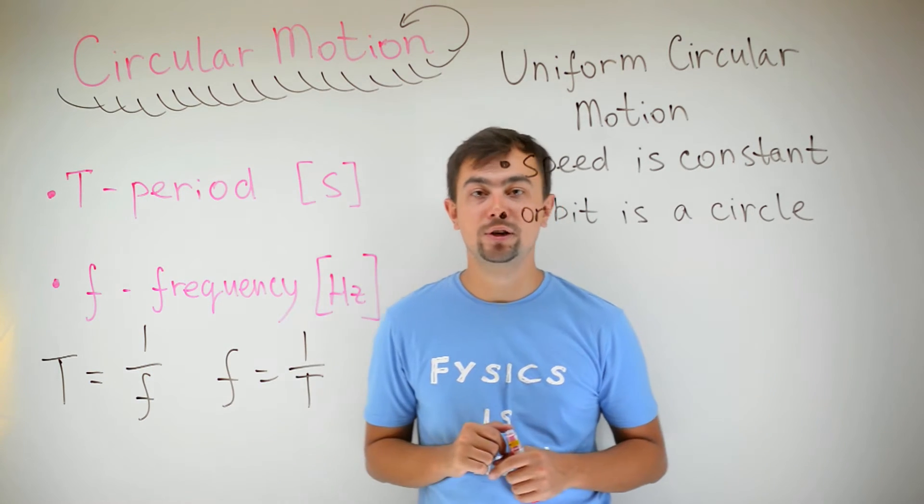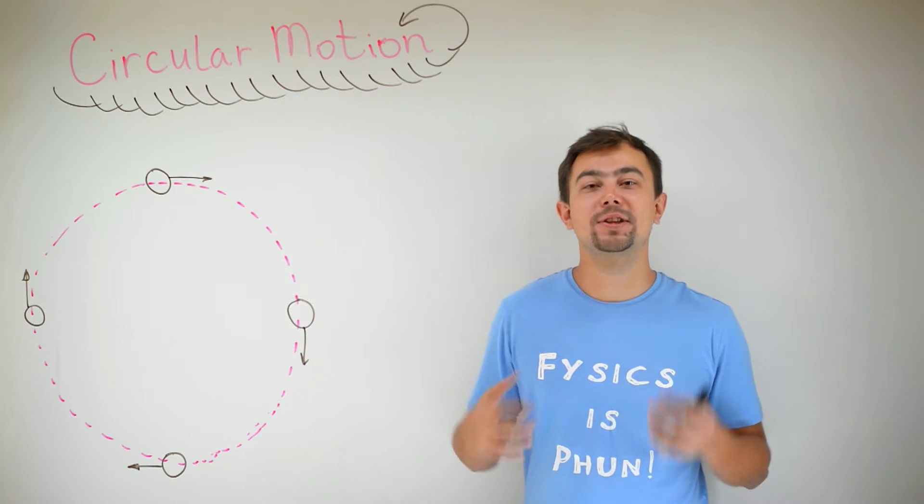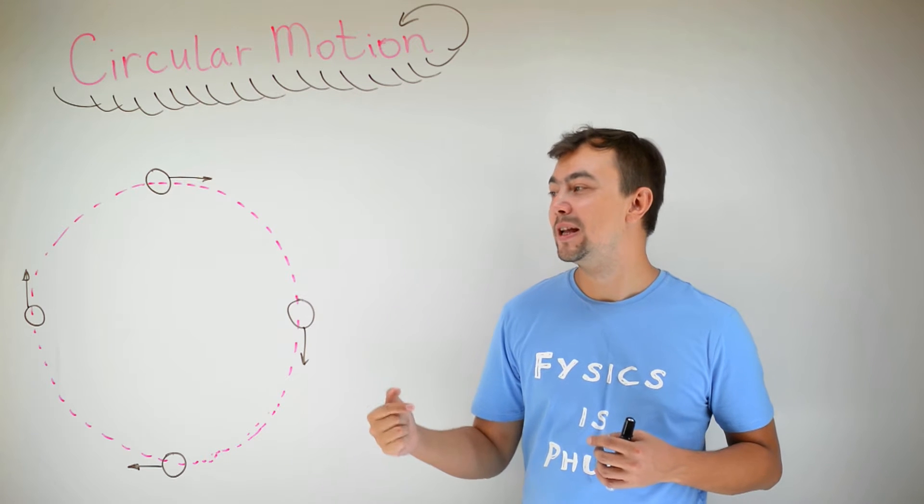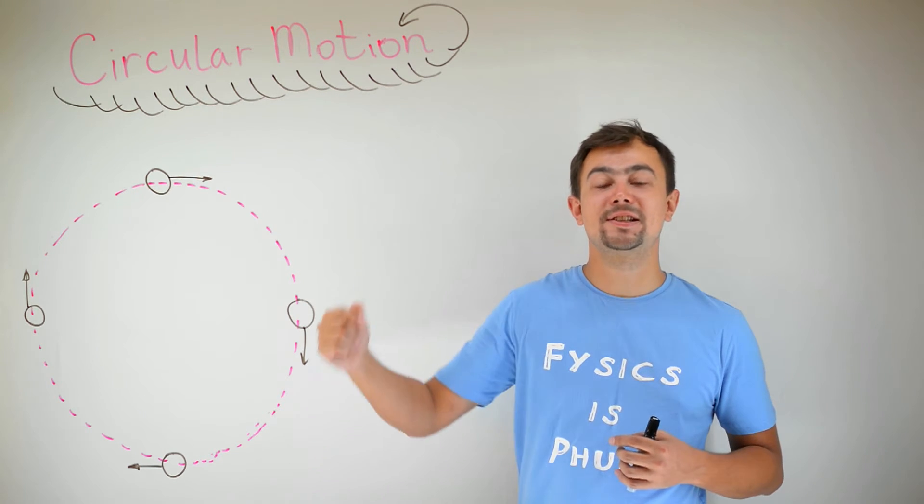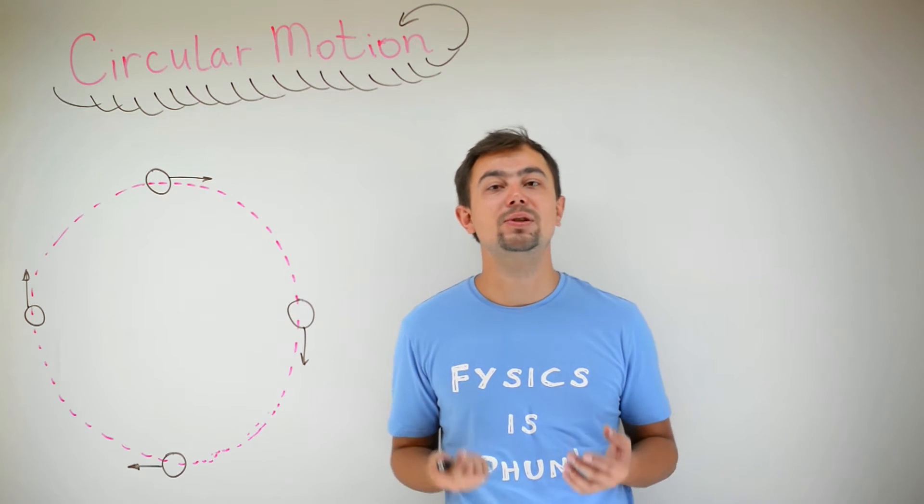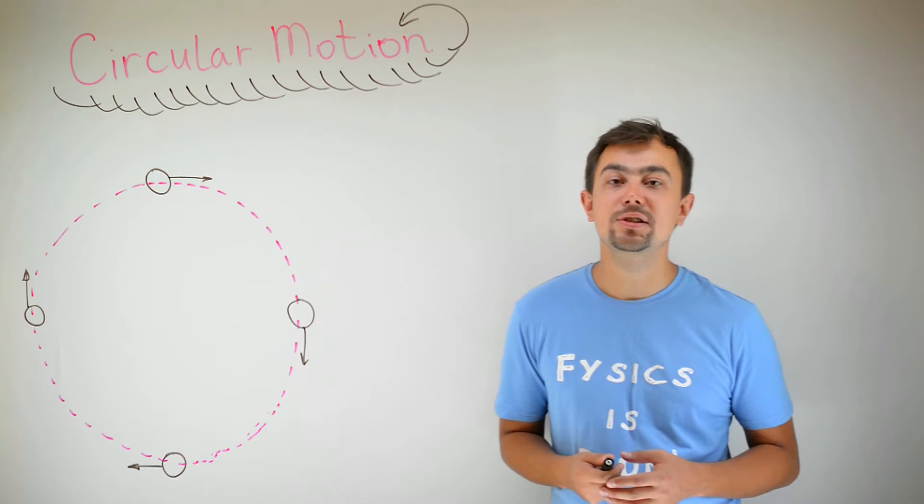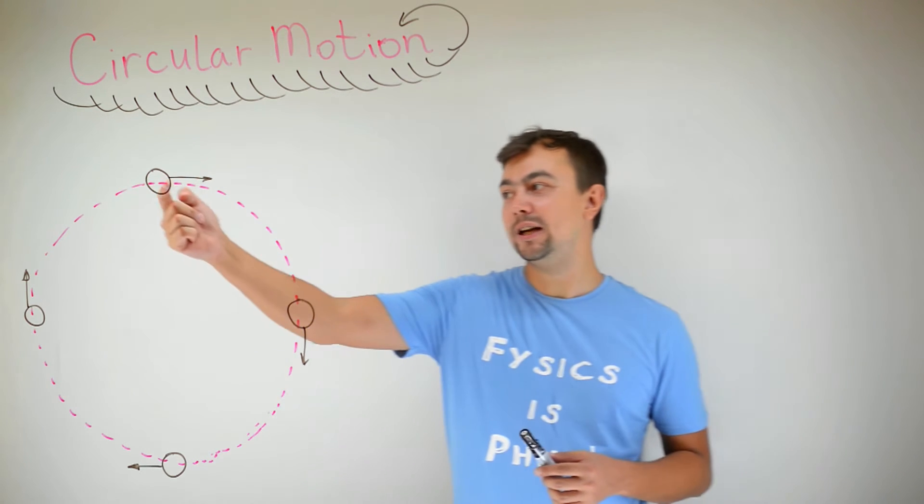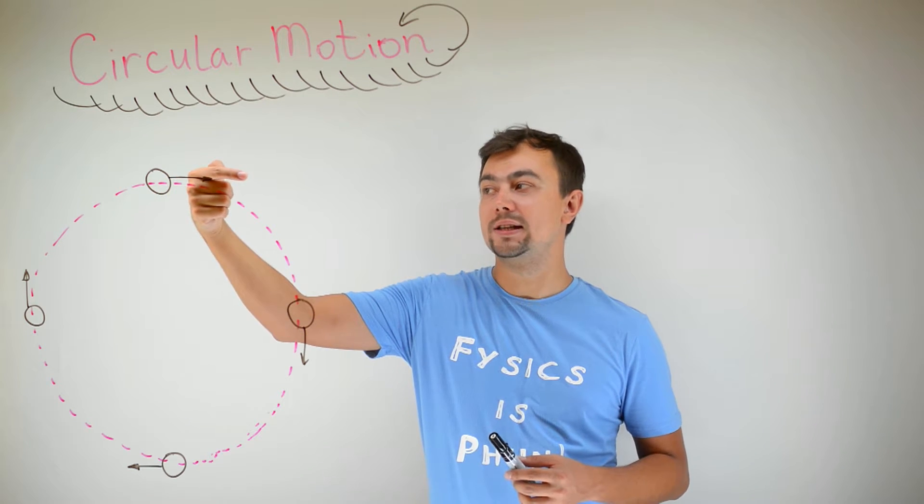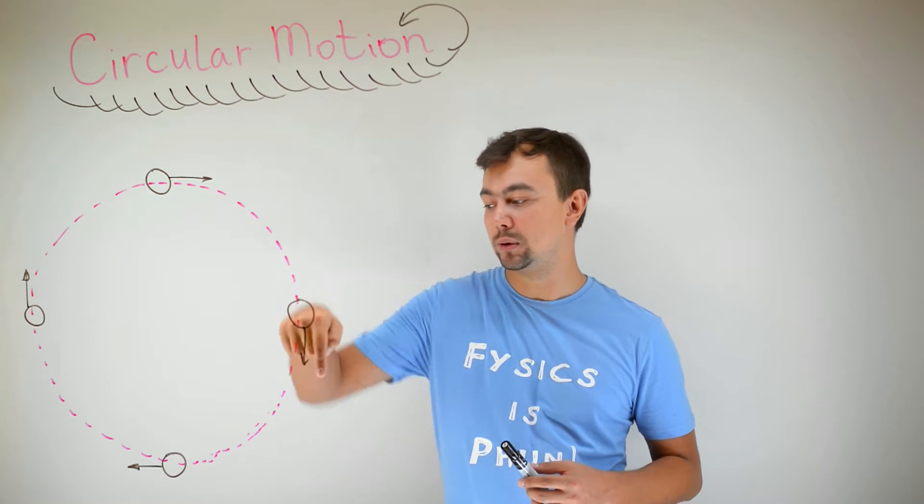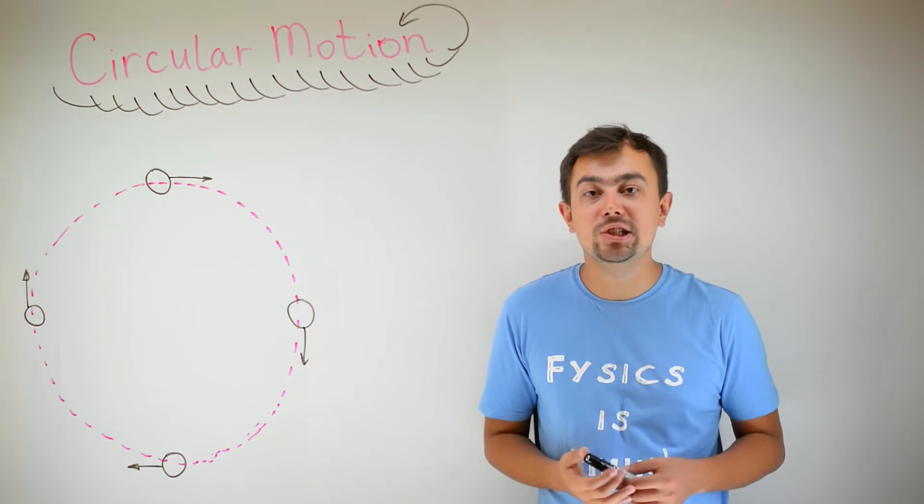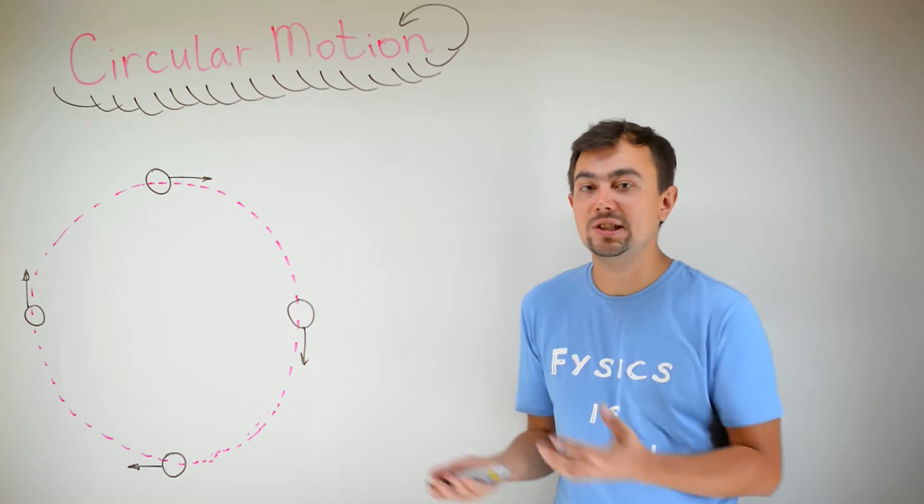We can say that the ball that we kicked earlier is performing uniform circular motion. So the speed is constant. But if the speed is constant, can we say that the acceleration of the ball is zero? Well, actually no. If you look carefully, the speed of the ball here has a direction to the right. Here, downwards. Left, up. So the direction is always changing.